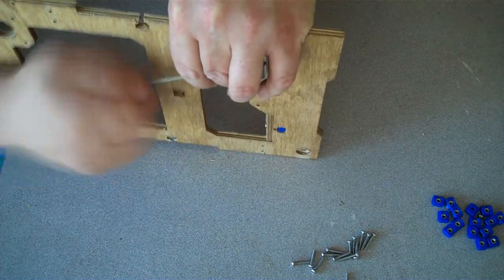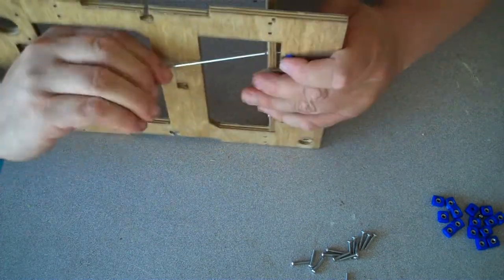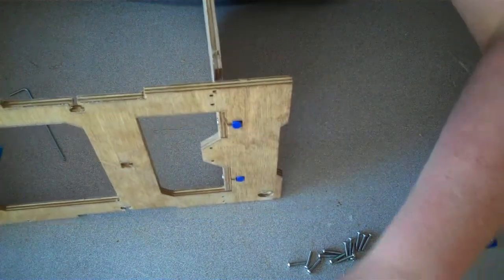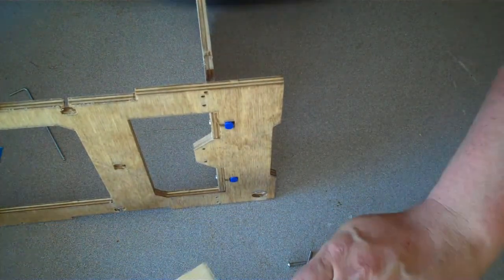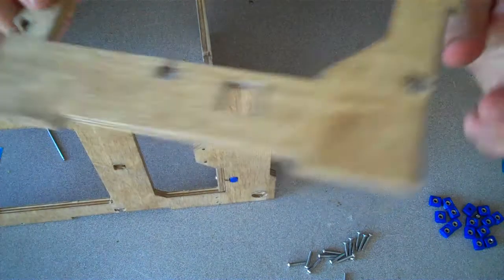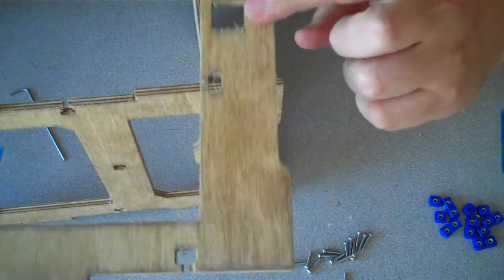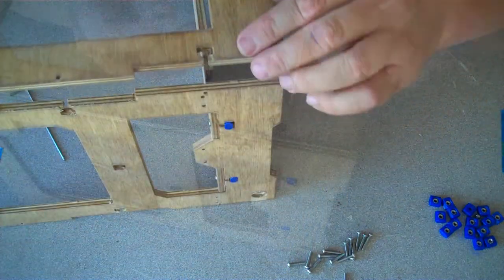Now that we've got the bottom and the rear mostly attached, we're going to move on and attach the left side of the printer. The left side and the right side look almost the same, except the left side has this square hole for the USB plug.